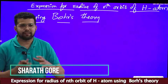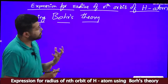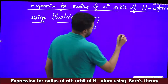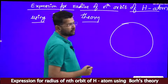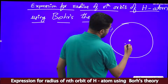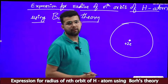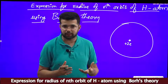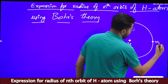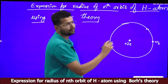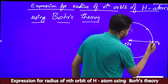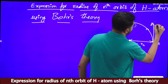Hello dear students. Now we will derive an expression for the radius of the nth orbit of a hydrogen atom using Bohr's theory. We will consider an electron revolving in the nth orbit of the hydrogen atom. This is the nucleus, and the charge of the nucleus is plus Ze, because in the nucleus there are only protons, which are positively charged. Z stands for atomic number. Let us suppose that one electron of mass m_e is revolving around the nucleus in orbit n. The radius of this nth orbit is R_n and the velocity is V_n.